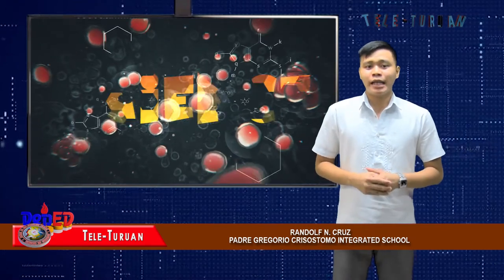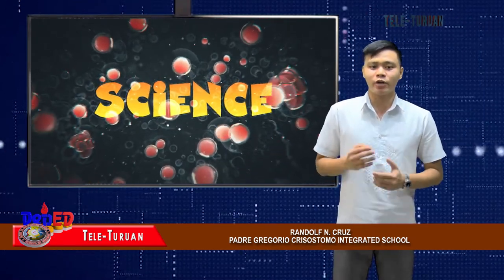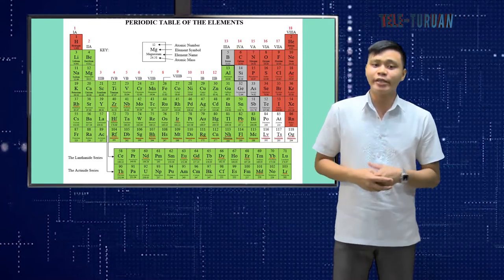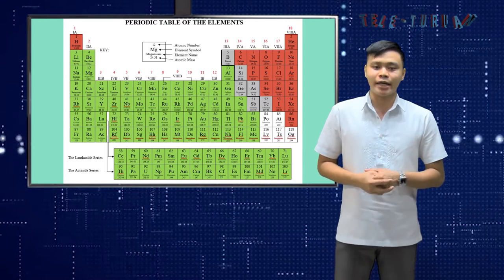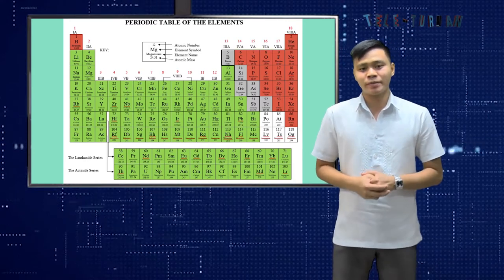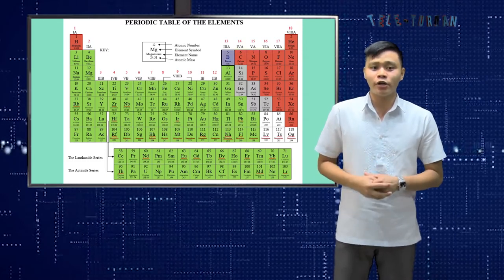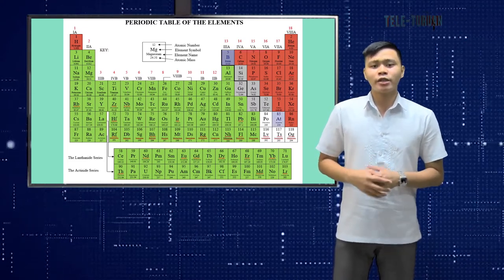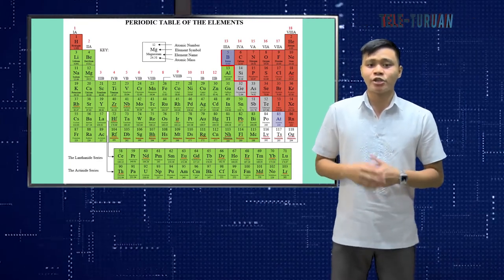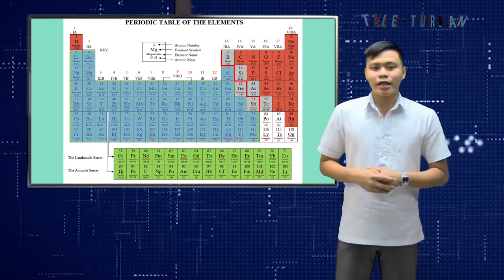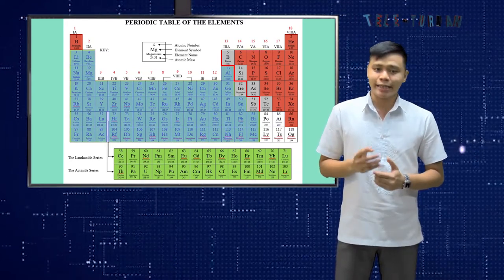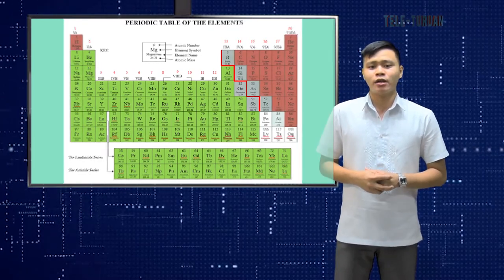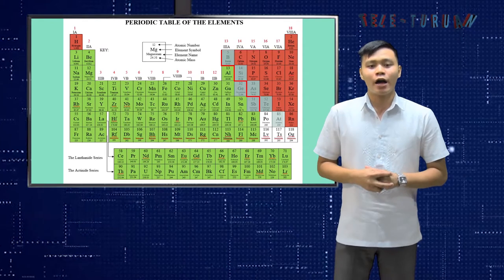Welcome back, my dear televiewers. Let us continue our discussion regarding the formation of ions. In many cases, the position of elements on the periodic table will help you determine the kind of ion formed — whether an anion or cation — and the size of the ionic charge. Look at the periodic table. Starting with boron, atomic number 5, and continuing down to the right to astatine, atomic number 85, there is a bold staircase-shaped line. Elements to the left of this line are metals and commonly form cations. Elements to the right are non-metals and commonly form anions. Some elements adjacent to the line are called metalloids.